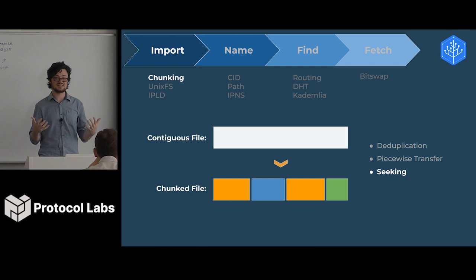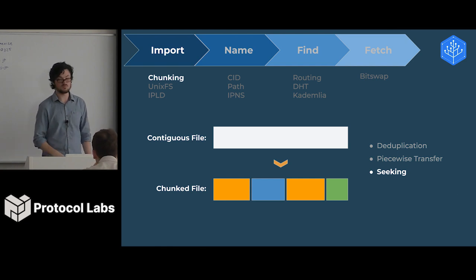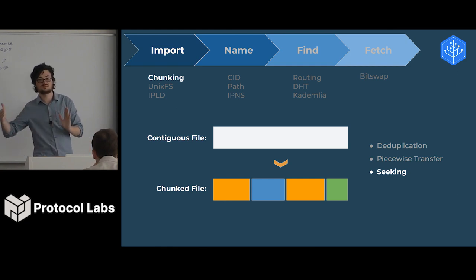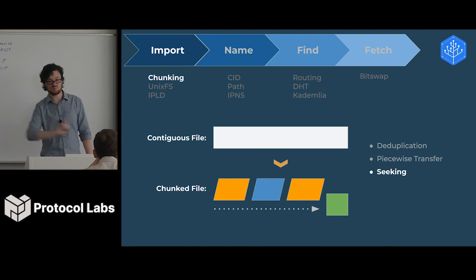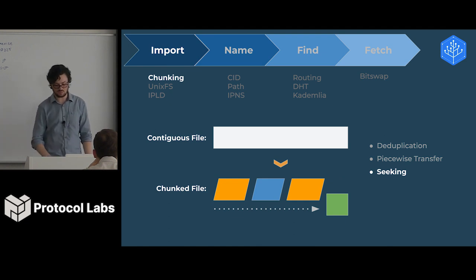Finally, chunking allows us to seek in a file. Instead of having to download the entire file to use the piece we want, we can skip past all the pieces we don't care about and find the piece we want.